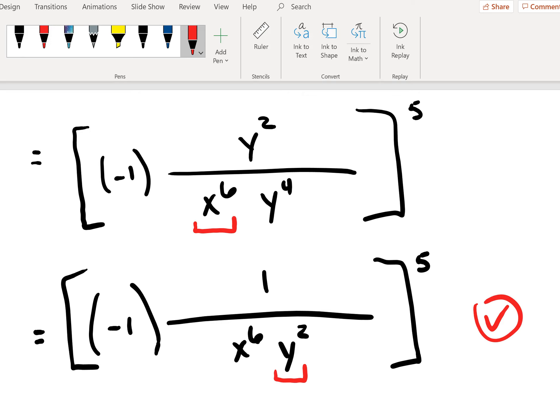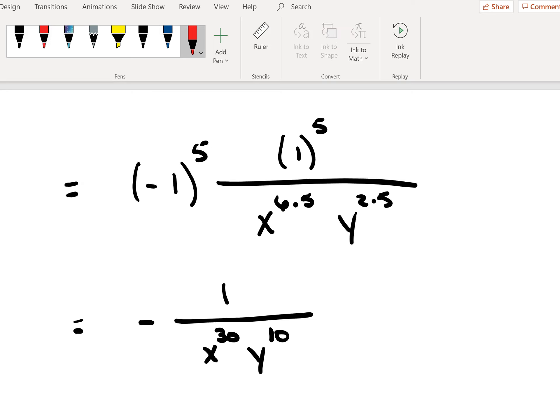Now, though, we can take our exponent five here that's outside the brackets and we can apply it to each individual factor. Please remember that you must have strict multiplication and division processes to be able to do this.